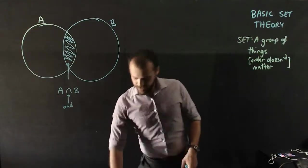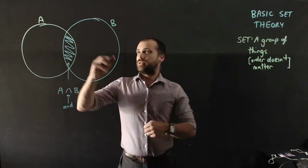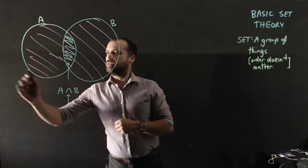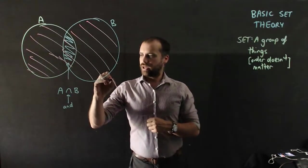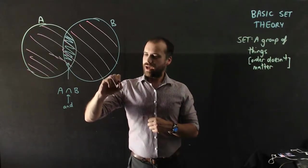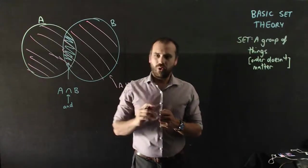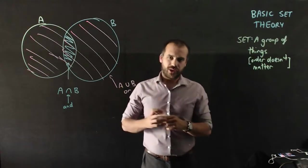And then the other really important part where we talk about set theory is the whole thing, all this stuff, and we'll call that A union B. A, in other words, or A or B, don't care what it is.